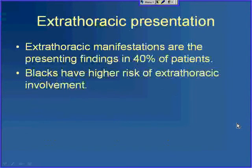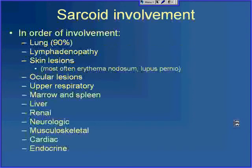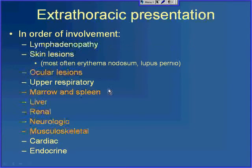Some studies show up to 40% of sarcoid patients actually present because of extrathoracic manifestations. In addition to higher incidence overall, Black patients also have a higher incidence of extrathoracic involvement. Sarcoid can affect almost any organ system — the lung is most common, often with adenopathy, but it can also affect the skin, often as erythema nodosum and lupus pernio on the face. Today I'll discuss ocular sarcoid, marrow, spleen, liver, renal sarcoid, neurosarcoid, and musculoskeletal sarcoid.